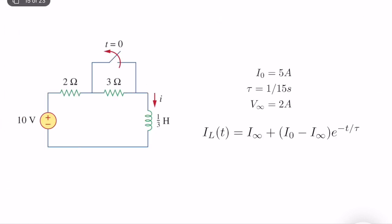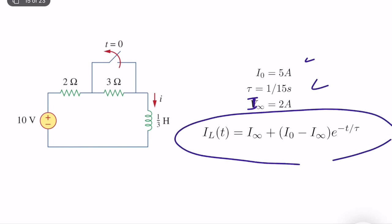We plug everything into the formula and find the time-domain expression for I_L of T. To summarize: I zero is five amps, I infinity is two amps, and tau is one over 15 seconds. That's all you technically need to know about first order RL circuits. I will show another example on RL circuits and step response, then I will talk about op amps and energy storage elements.